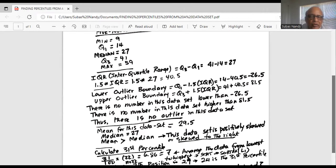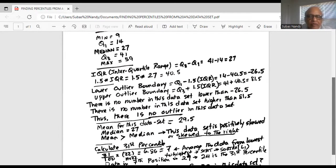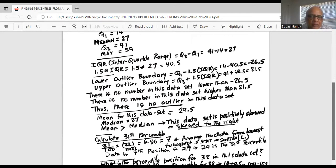Now we note the mean, which is X bar, in this data set is 29.5. And the median we have already noted is 27. So mean is greater than the median. This data set is therefore positively skewed or skewed to the right.